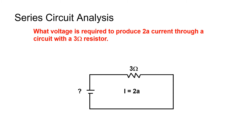In this example, what voltage is required to produce 2 amps of current through a circuit with a 3-ohm resistor? Voltage equals current times resistance. Therefore, voltage equals 2 amps times 3 ohms, or 6 volts.